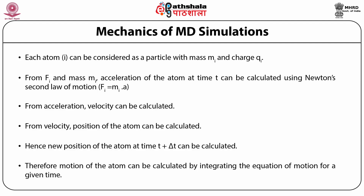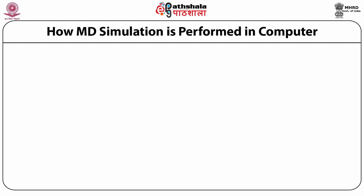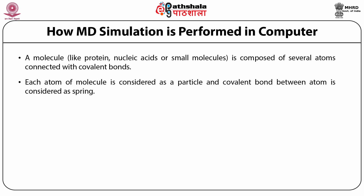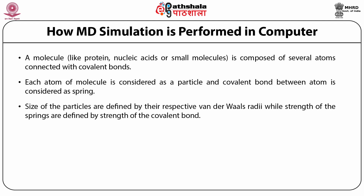The motion of atoms can be calculated by simply integrating the motion of particles for a given time. In MD simulation, molecules such as protein, DNA, RNA, or small drug molecules are composed of several atoms connected with covalent bonds. Each atom can be considered as a small particle and covalent bonds as springs. The size of the particle is defined by their respective Van der Waals radii, while the strength of the springs is defined by the strength of the covalent bond.